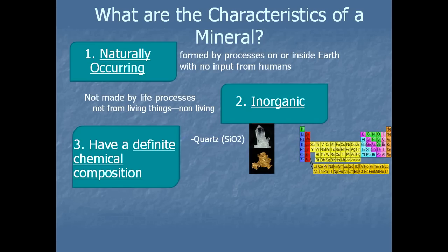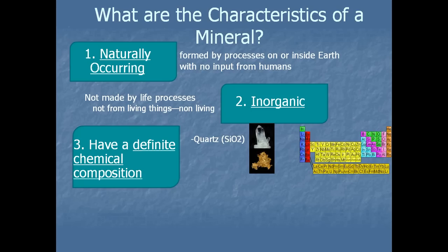The third characteristic is that minerals have a definite chemical composition. You'll see the minerals quartz and gold — they both have a chemical composition, which is what's shown in parentheses. The SiO₂ for quartz is its chemical formula, and those elements came from the periodic table on the left of the screen.